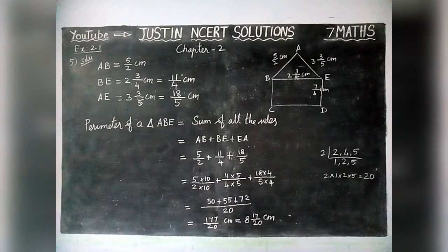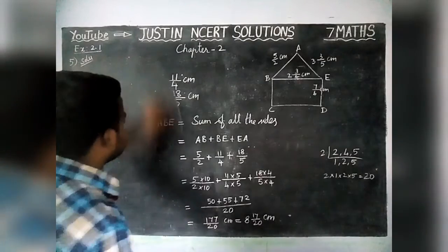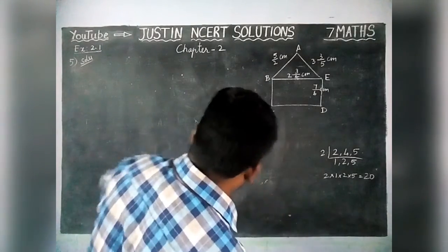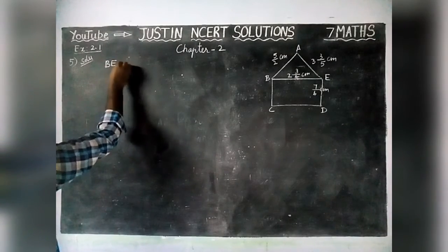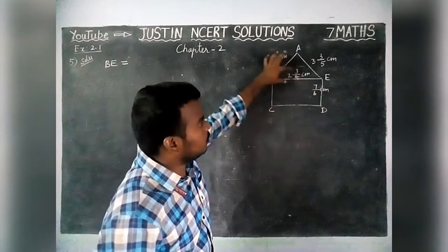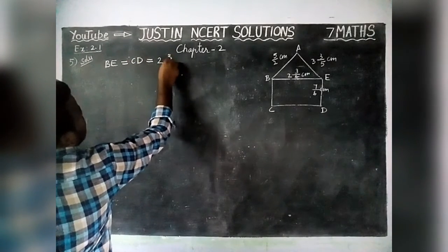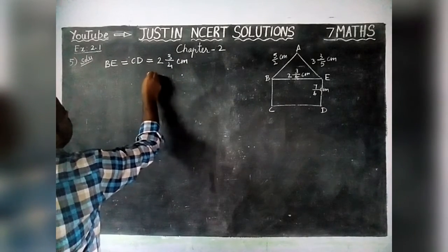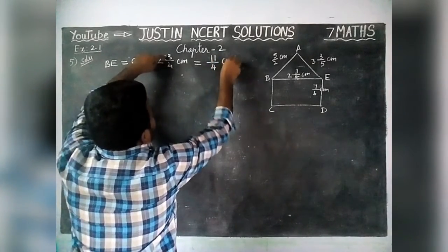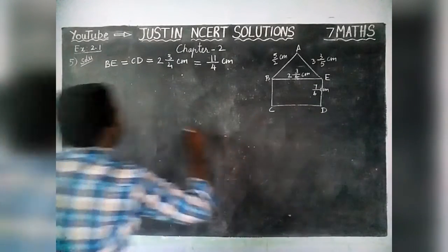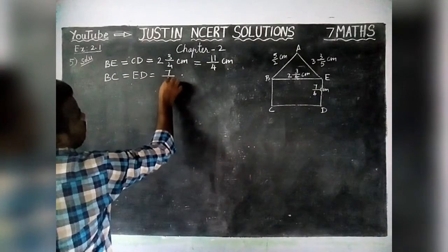Now we are going to find the perimeter of rectangle BCDE. In a rectangle, opposite sides are equal. So BE = CD = 2 and 3/4 centimetre. Converting to an improper fraction: 2 × 4 = 8, and 8 + 3 = 11, so BE = CD = 11/4 centimetre. Also, BC = ED = 7/6 centimetre.